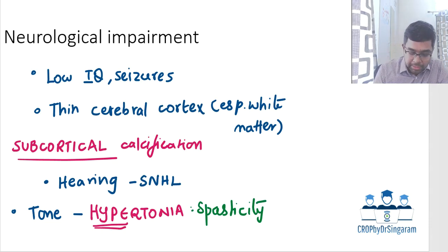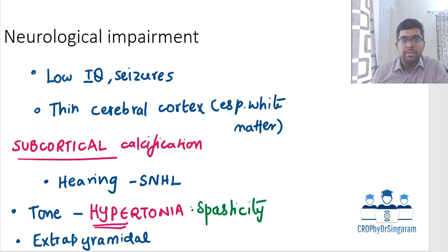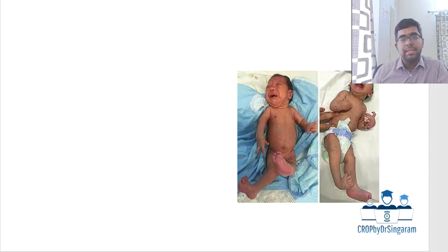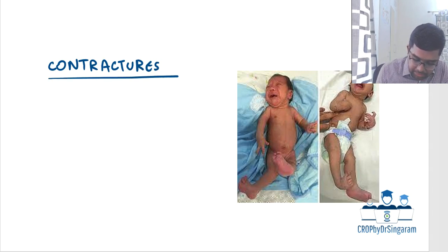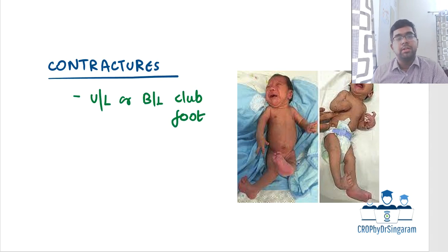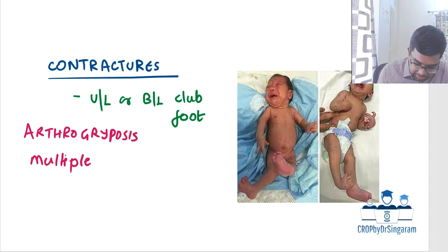These children also have increased incidence of extrapyramidal manifestations, including chorea and athetosis. Regarding skeletal involvement, the limbs are affected due to contractures, which commonly manifest as unilateral or bilateral club foot.